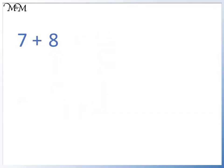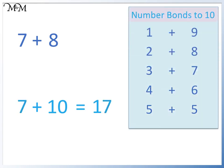7 plus 8. 7 plus 10 equals 17. From our number bonds to 10, 10 is 2 larger than 8, so we subtract 2 from our answer. If 7 plus 10 equals 17, 7 plus 8 is 2 less and equals 15.